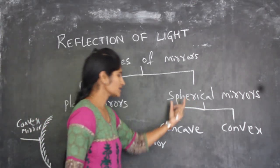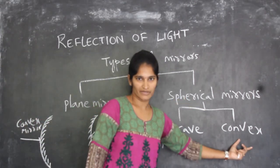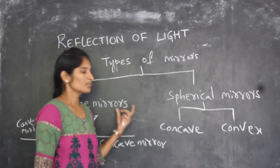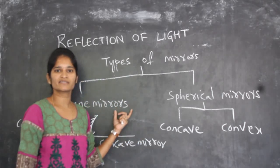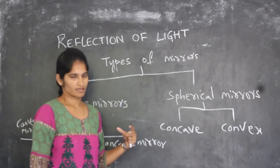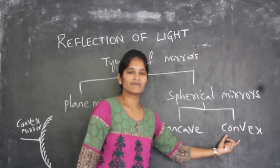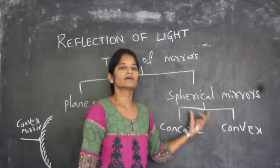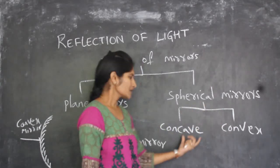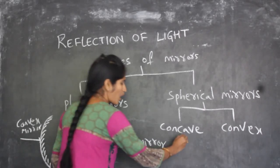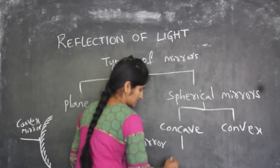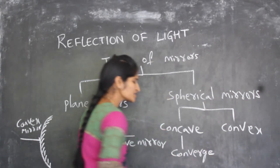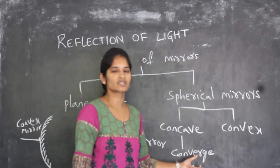So we have plane mirrors and spherical mirrors — concave and convex. Plane mirrors form images the same size as the object. In concave and convex mirrors, depending on the position of the object, the images will vary. In concave mirrors, the image will always converge — that means the image is formed by converging of light.